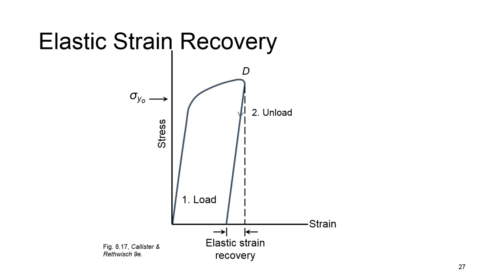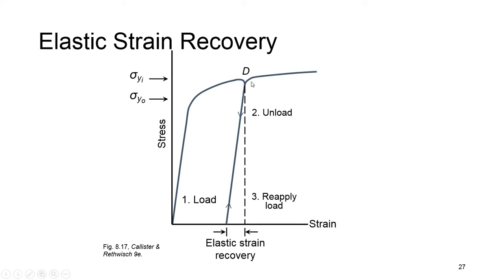After elastic strain recovery, we are dealing with a material that is slightly longer than before due to permanent deformation. If we reload the same material, it behaves elastically until it reaches point D, then continues deforming plastically. The start of plastic deformation is no longer sigma y0, but a new, higher yield strength. This shows that we can increase the yield strength of a material by applying a little plastic deformation and removing the load. If this is done cyclically, you can increase the value more and more, though there is a limit.